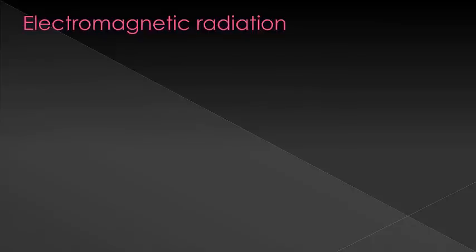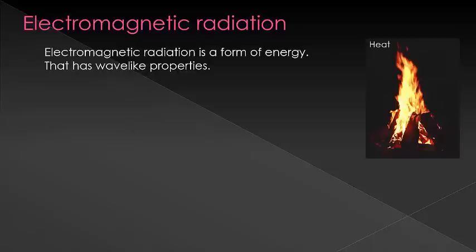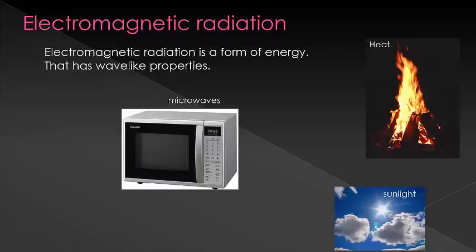Electromagnetic radiation is a large part of our daily lives. For this chapter, we just need to define it a bit better and talk about some specific properties. Examples in our daily life include things like heat and microwaves, sunlight, x-rays.